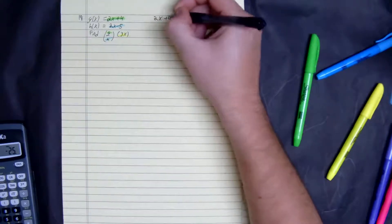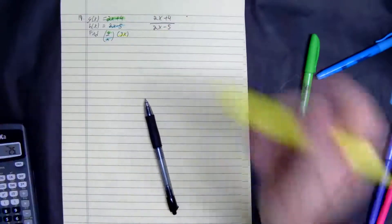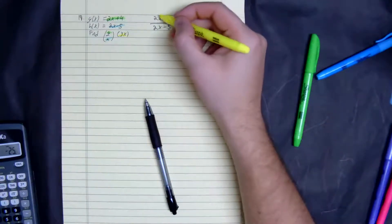2x plus 4 over 2x minus 5. Now we plug in—there's nothing to simplify, so we just plug in 3x for everything here.